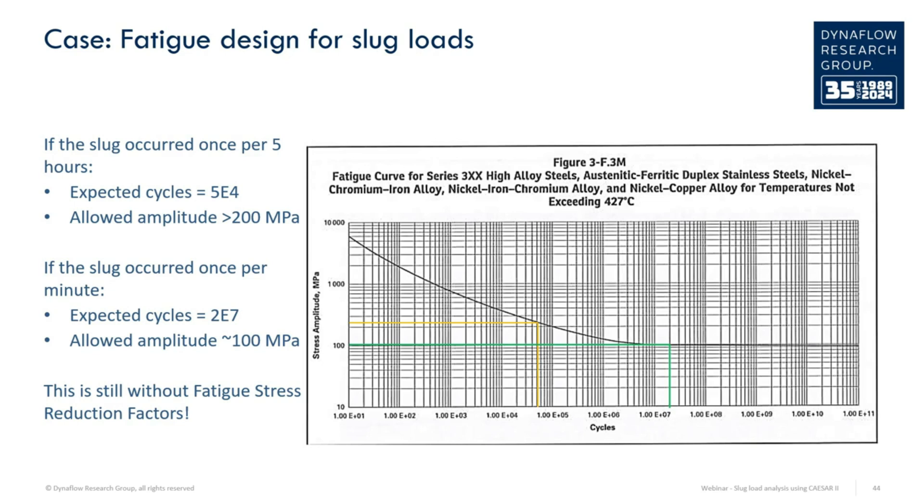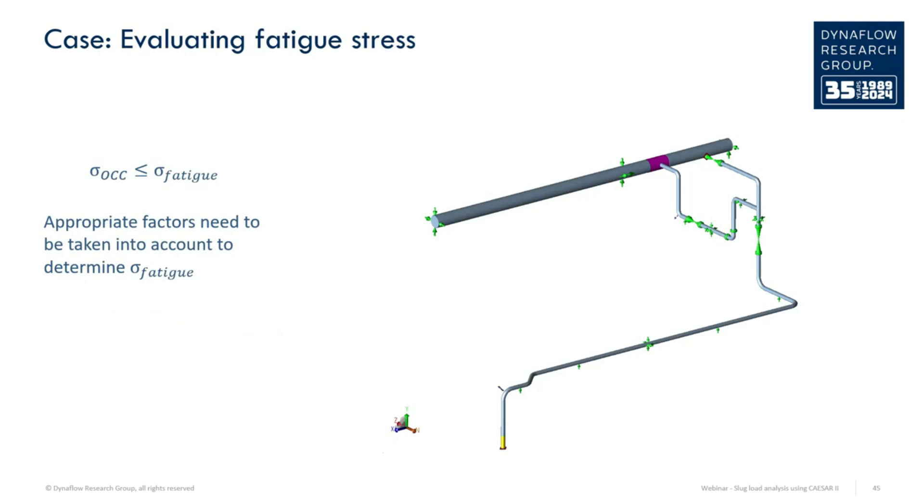For a slug occurring once every minute, we get many more cycles, and therefore a lower stress range. If the slug excites an eigenmode, and the pipe vibrates for a while after each hit, the allowable reduces even further.